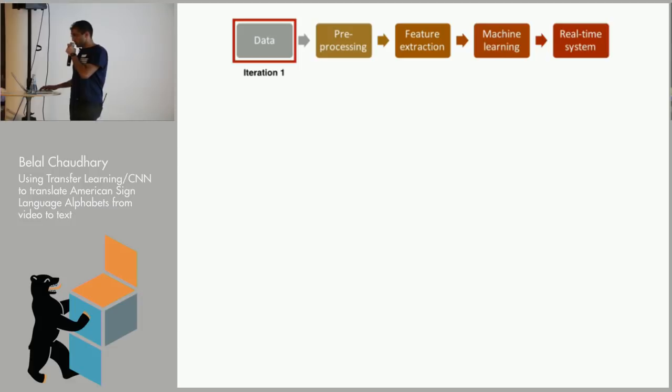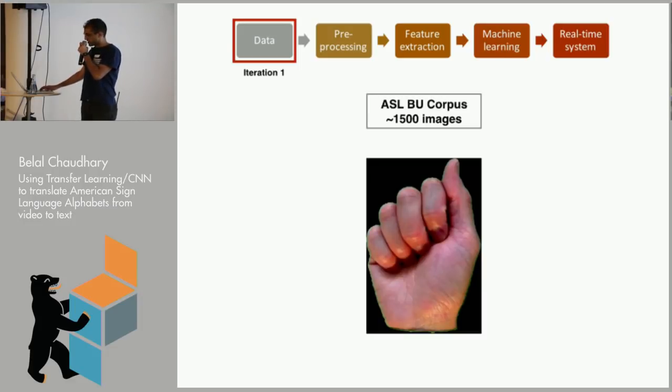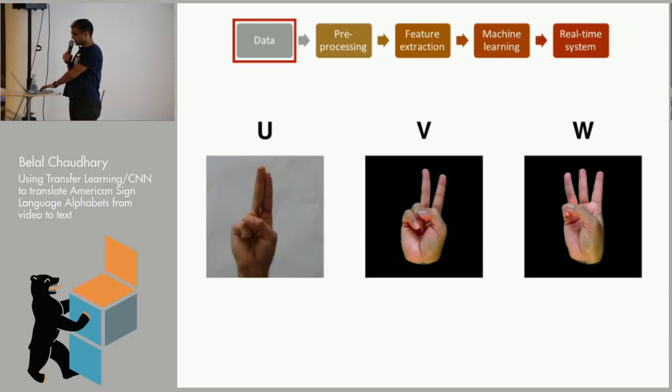So first, what does sign language look like? That's an A, for example. To start off with the data, I just wanted to quickly iterate. There's one open-source data set available for sign language. This is the American Sign Language Boston University corpus, around 1,500 images of equally balanced classes. It's very clean. You can see it's cropped, taken on a green screen. So I took this as a starting point and went ahead to just test out with it. And just quickly, yeah, this is an example of sign language.